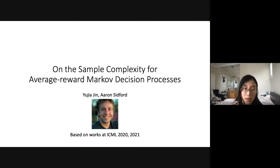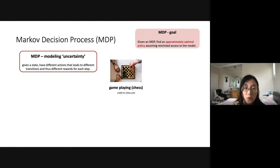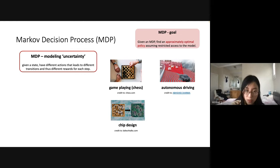The problem we are going to look at is this basic model of Markov decision process, a classical mathematical tool that models uncertainty. Given a state, an agent can take different actions that might lead to different transitions and different rewards for each step. There are many real-world applications: for example, game playing or chess, autonomous driving, and chip design in industry can all be modeled by this powerful mathematical tool.